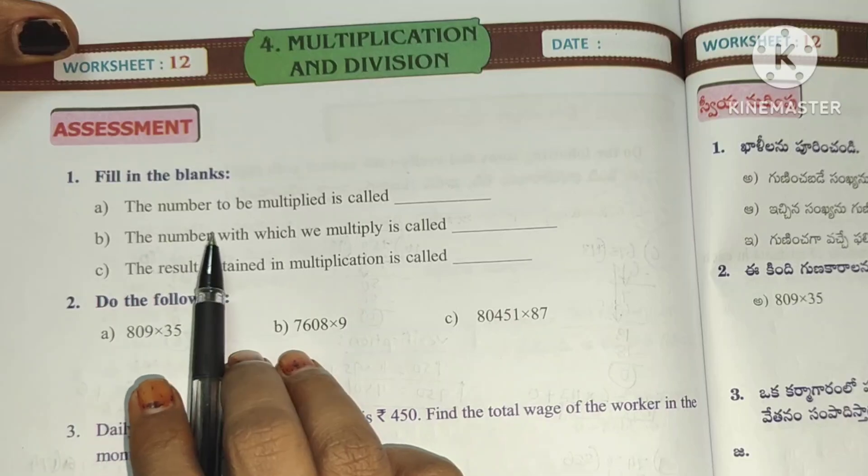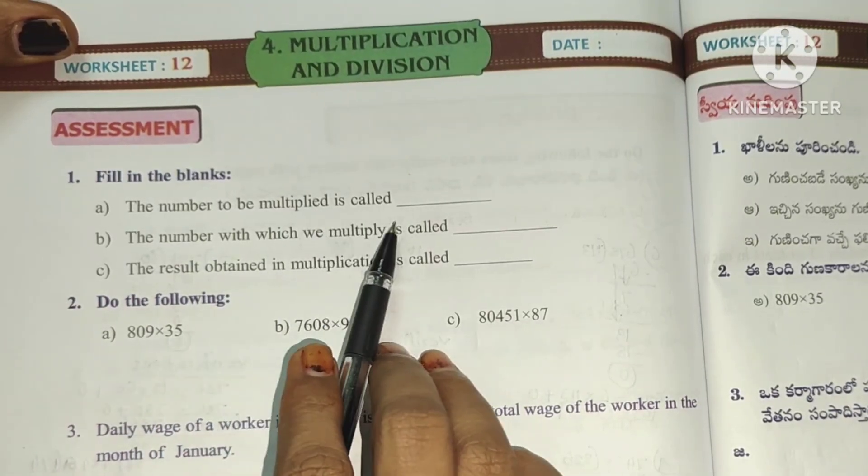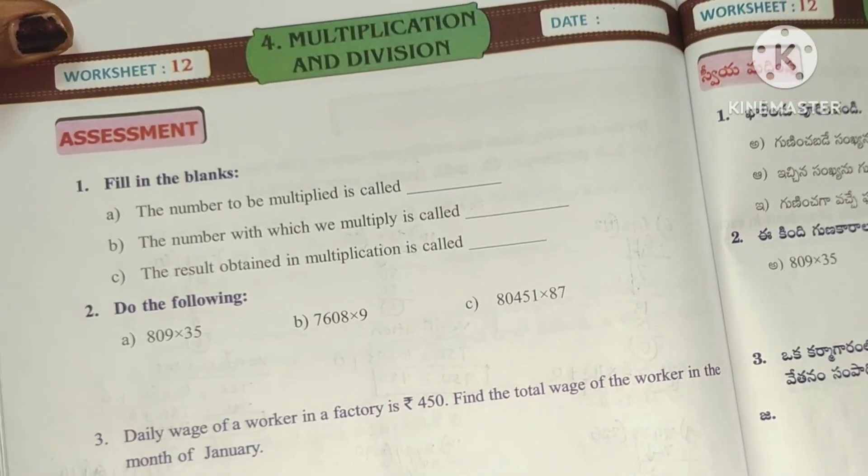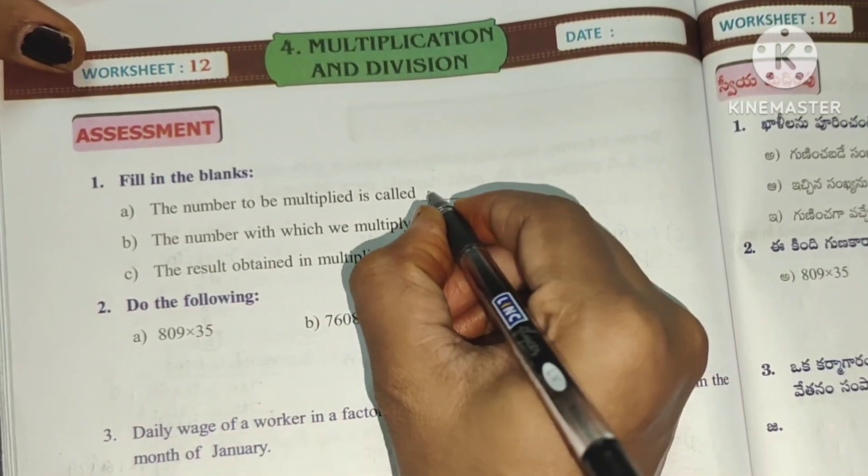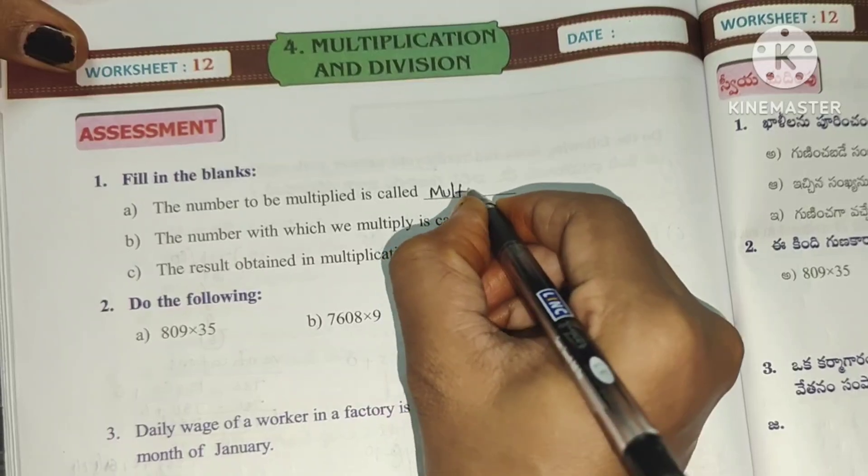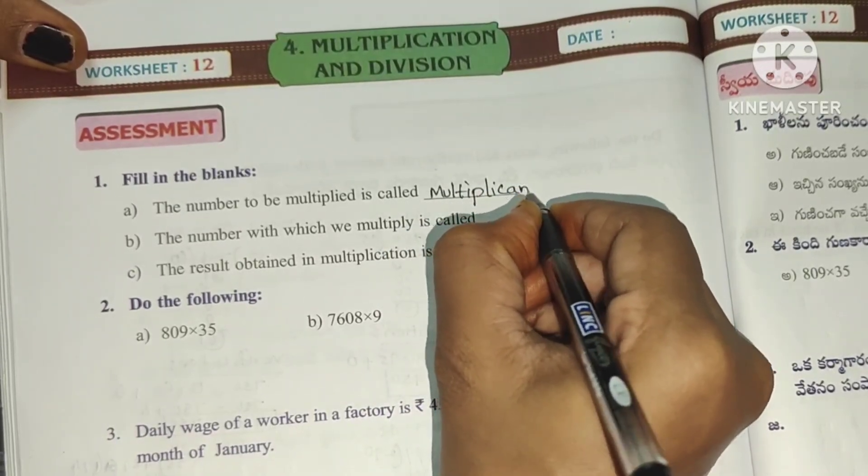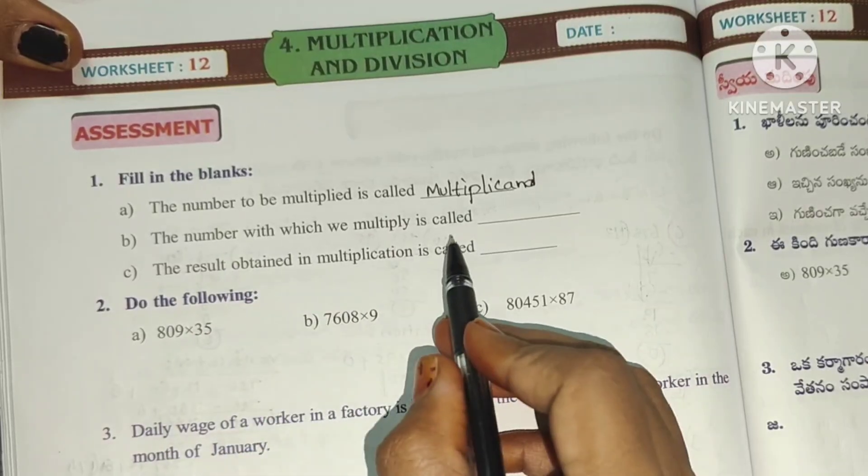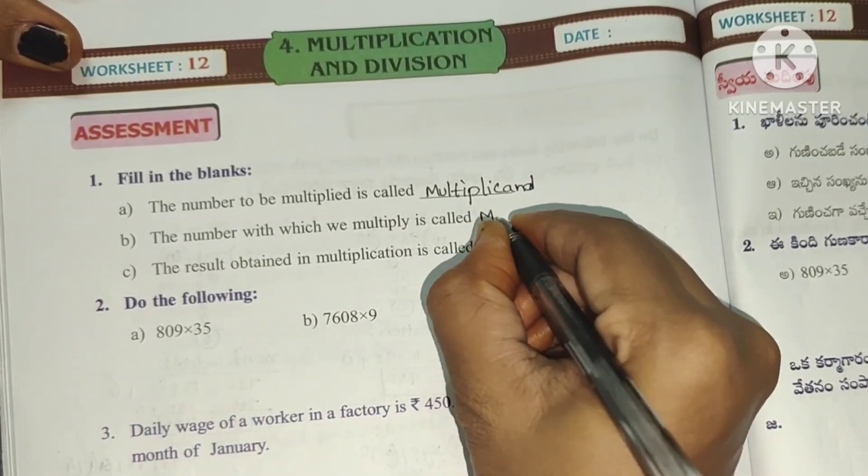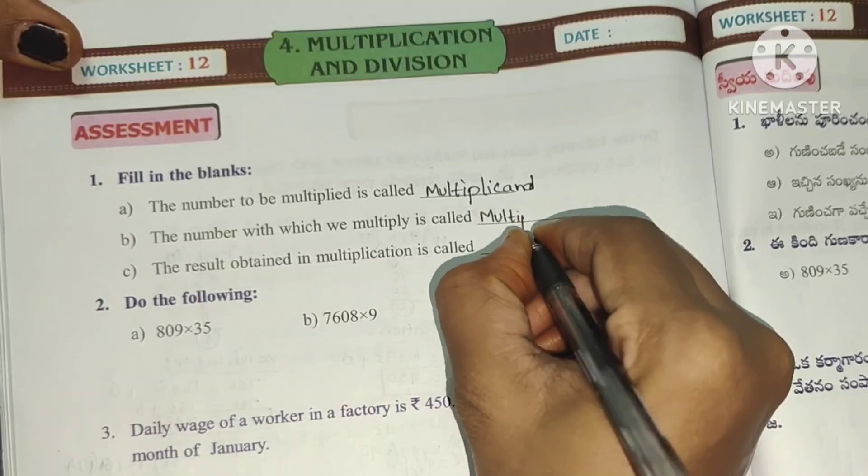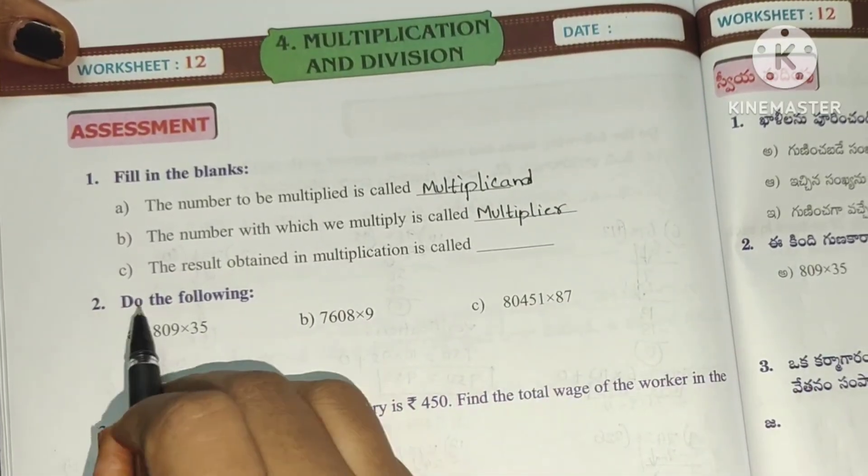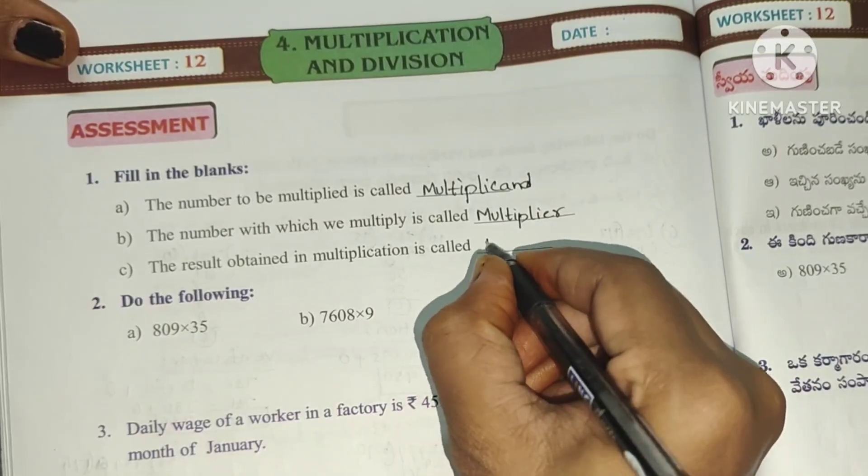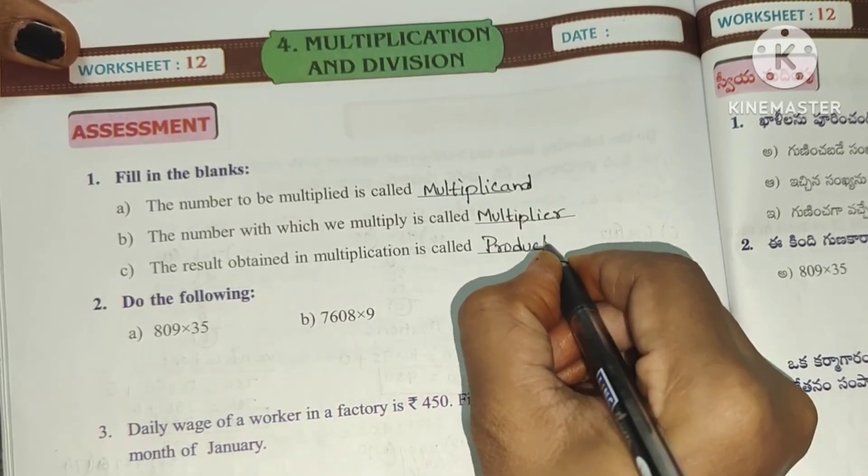So first one, fill in the blanks. The number to be multiplied is called multiplicand. And the number with which we multiply is called multiplier. The result of multiplicand into multiplier is called product.